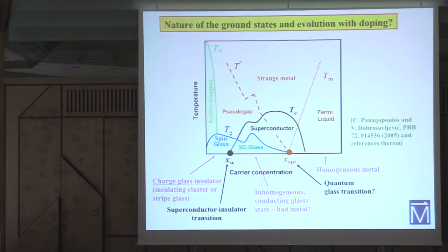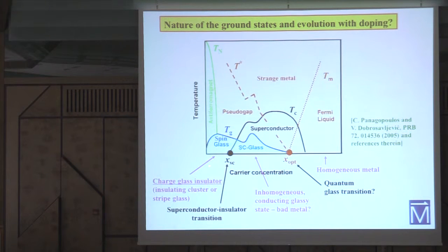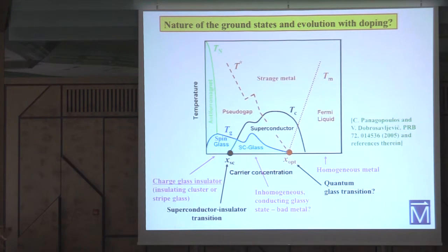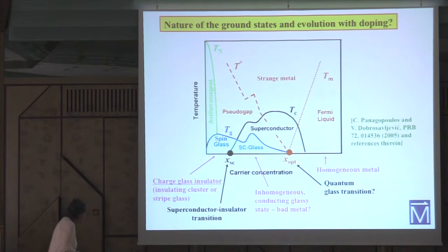This work was a motivation for our studies of the ground state in this regime. We have established, as have other groups, at least in lanthanum-based cuprates, that this state is a charged glass insulator. The spin degrees of freedom form a spin glass phase, but we are interested in what happens at low temperatures — we want to know what the holes do.